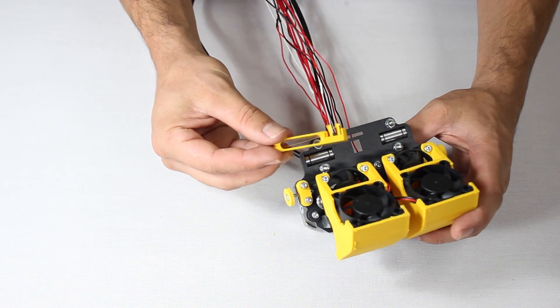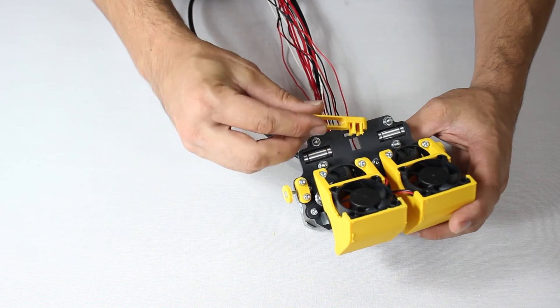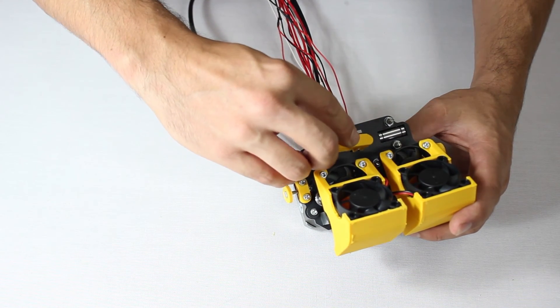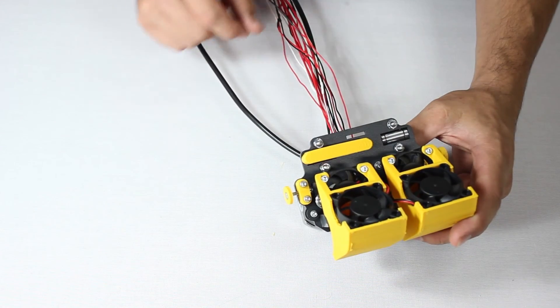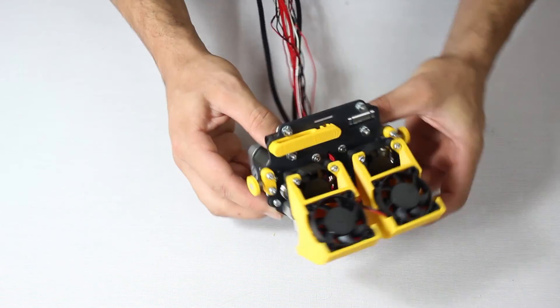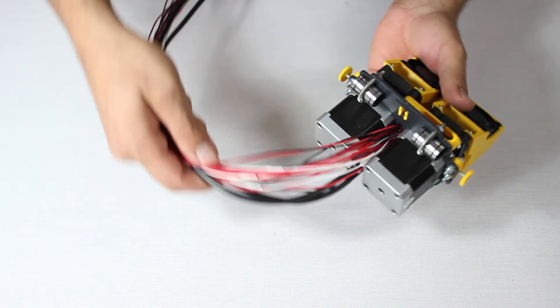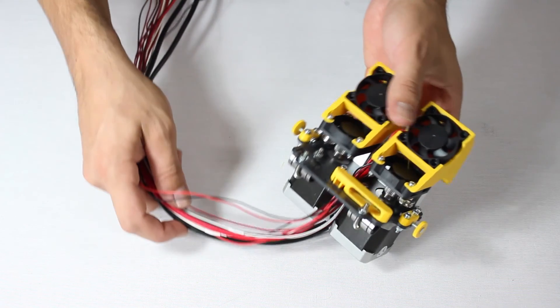The last step is to click this printed part into position. Don't forget to place it facing the correct way. And there, the dual extruder unit is ready.